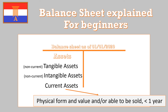Current assets are in physical form, have value, and you are able to sell them — but you expect to sell them within a year. Think about cash, money you still need to receive from customers (accounts receivable), and your inventory. All those kinds of things are current assets.